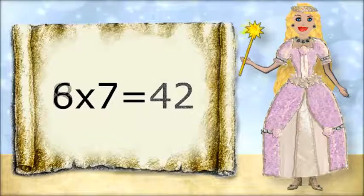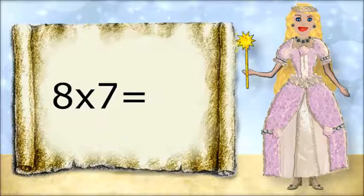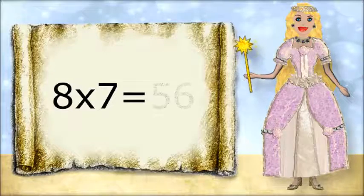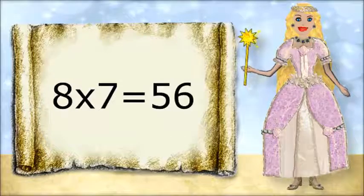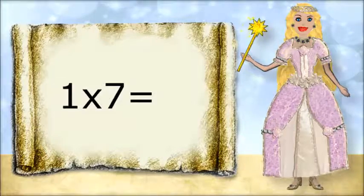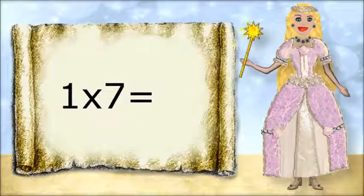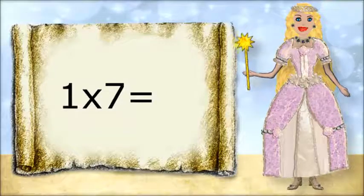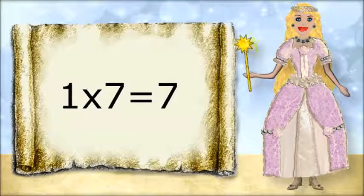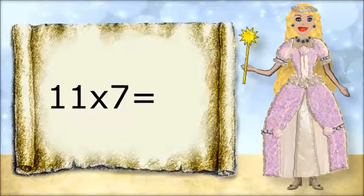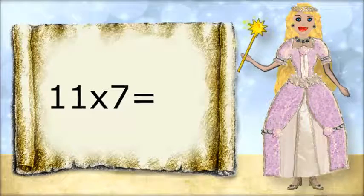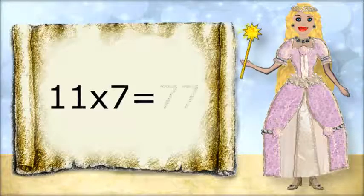8 times 7 equals 56. 1 times 7 equals 7. 11 times 7 equals 77.